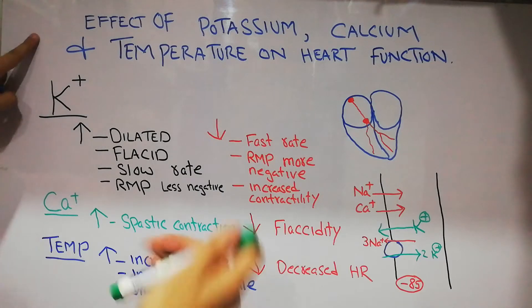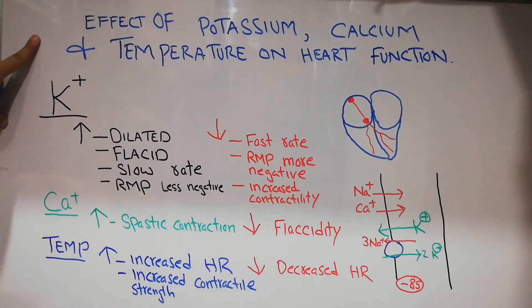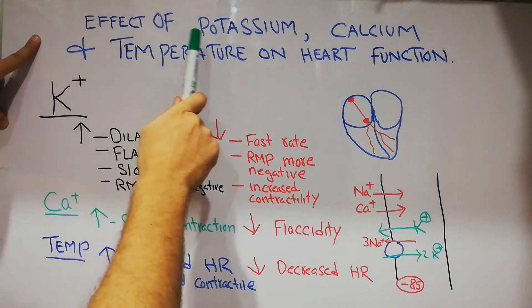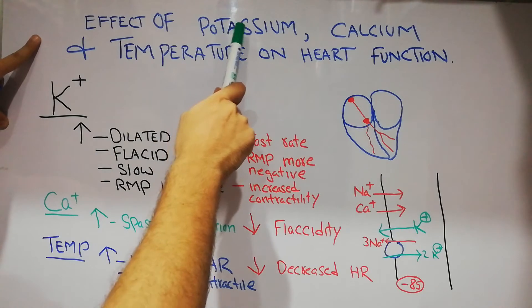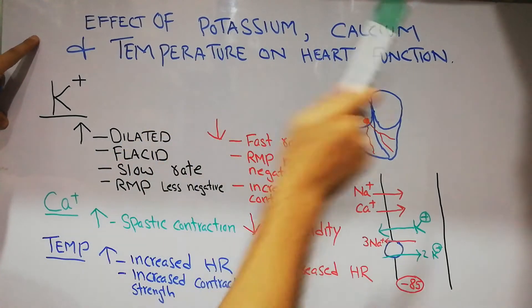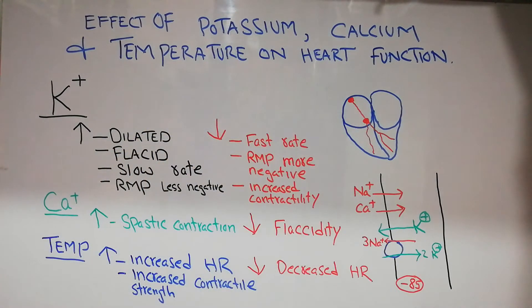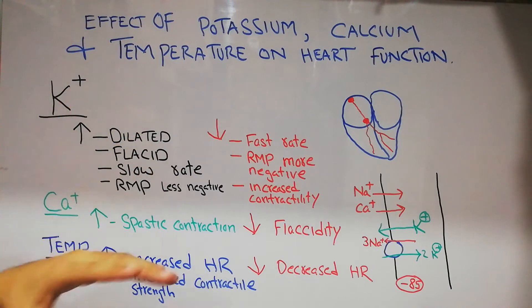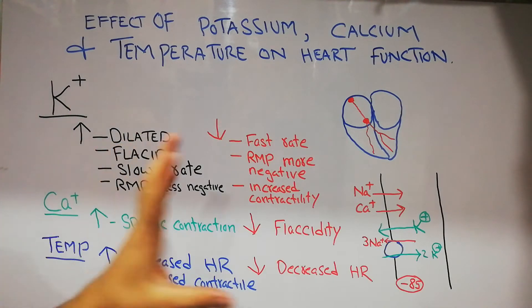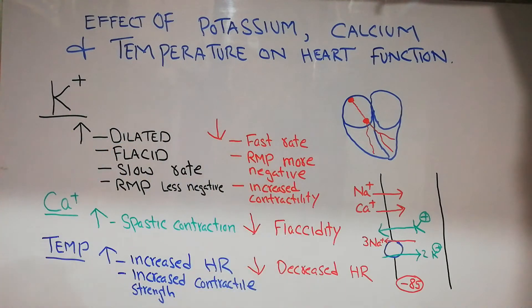In this lecture we are going to discuss the effects of increasing and decreasing levels of potassium, calcium, and temperature on the heart function — how the increase or decrease in potassium, calcium, and temperature will affect the heart function.